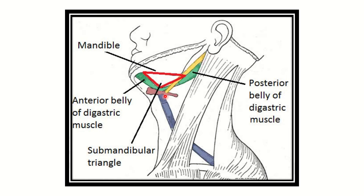In this picture, the green one is the posterior belly of the digastric muscle, and here is the anterior belly. The digastric muscle is a long muscle divided by the hyoid bone — in front of the hyoid bone is the anterior belly, and behind the hyoid bone is the posterior belly.